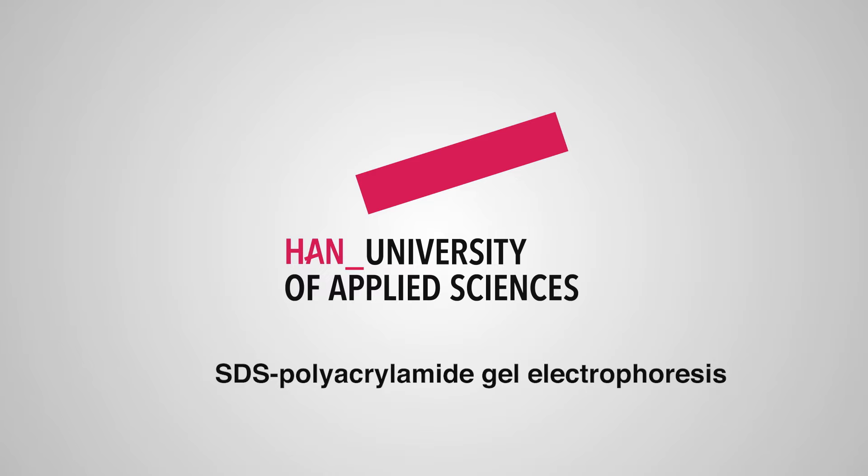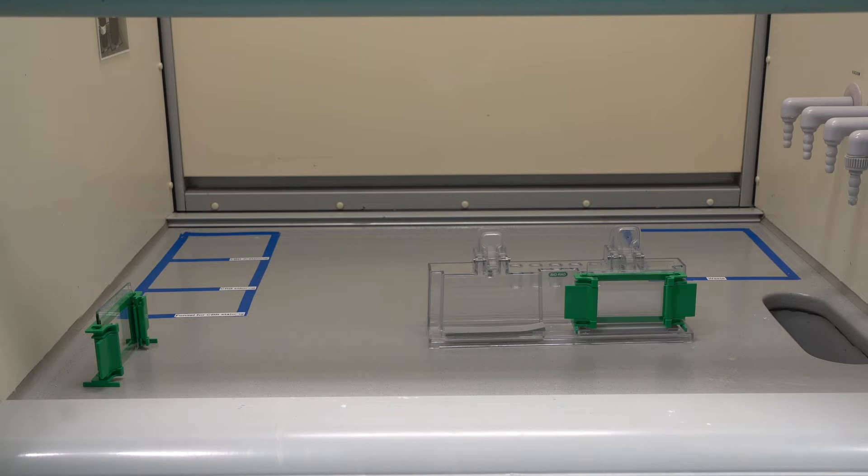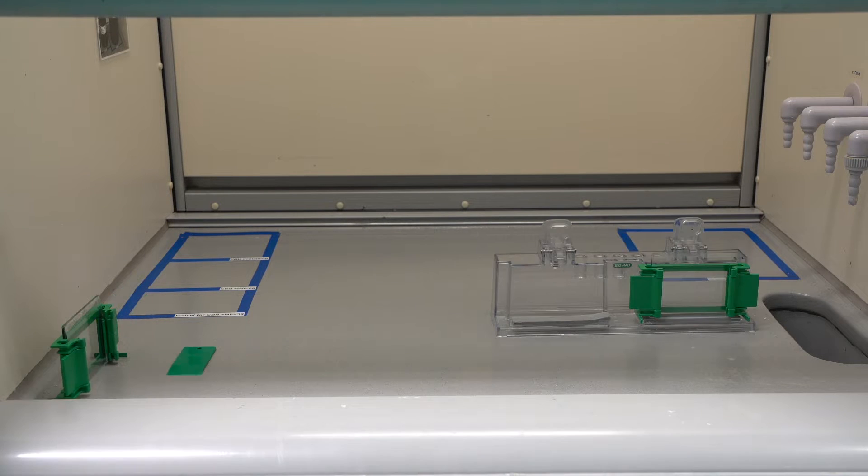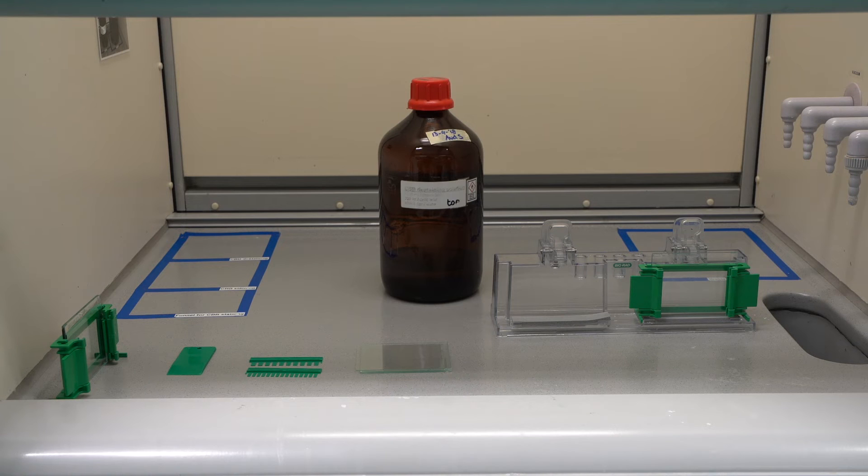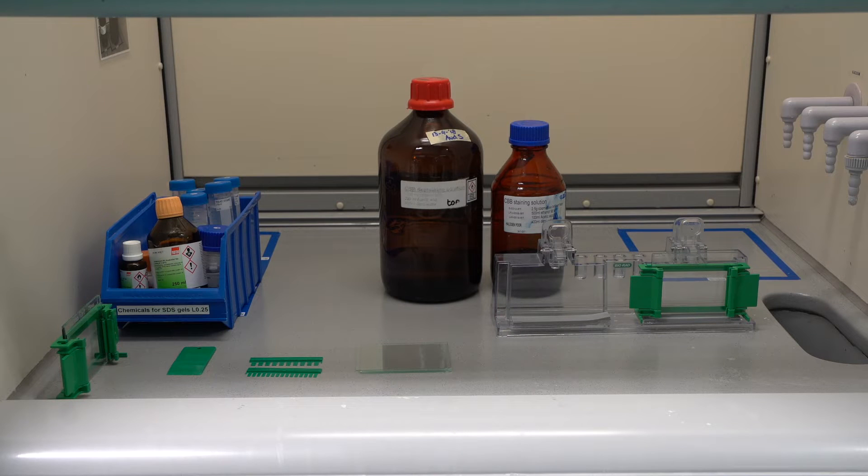SDS Polyacrylamide Gel Electrophoresis. You will need a casting frame, the casting stand and a rubber, green cutting aid, two glass slides, a spacer and a short plate, the green comb, de-staining solution, CBB stain, and SDS chemicals.